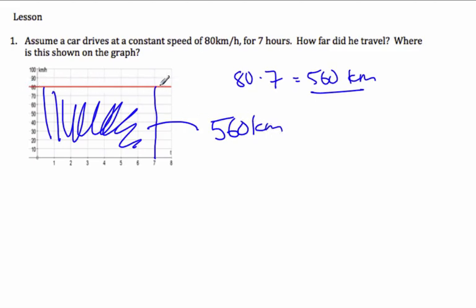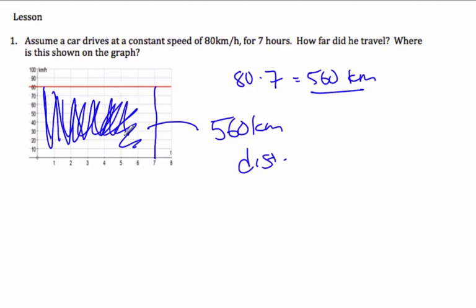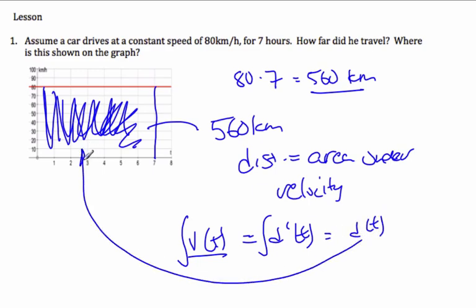The red line is my velocity, and I traveled for 7 hours. The area underneath the velocity curve is the distance. I know that velocity is the derivative of distance, so if I'm given velocity and I want to find the distance, I undo the derivative by taking the integral, and this gives me back my distance — found underneath the curve.